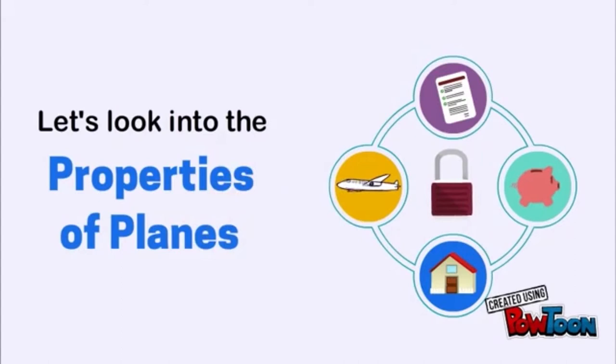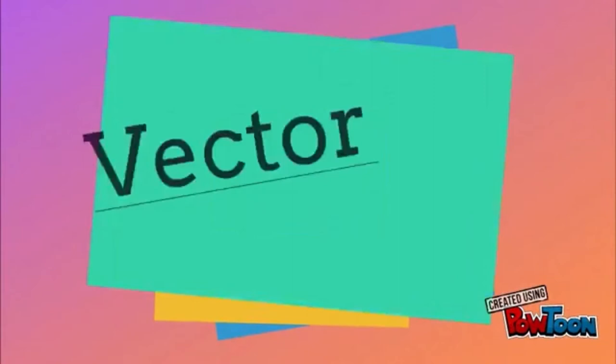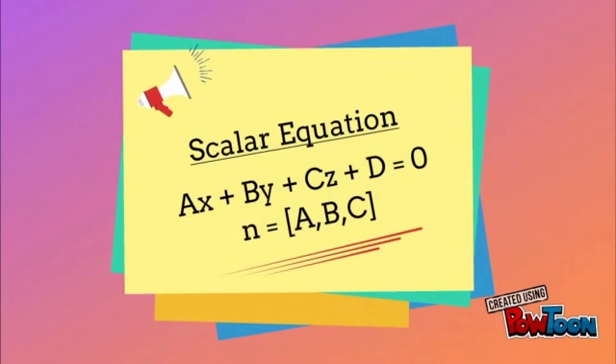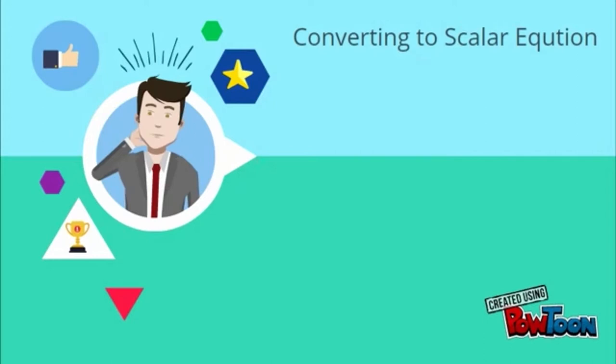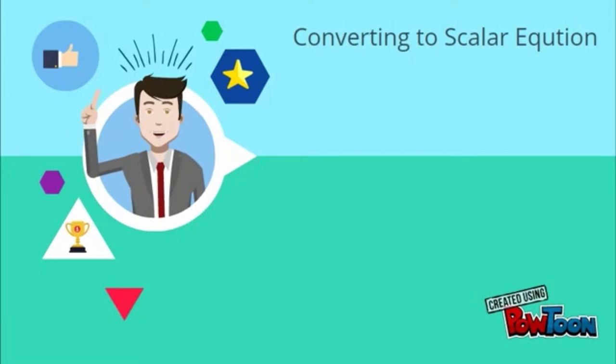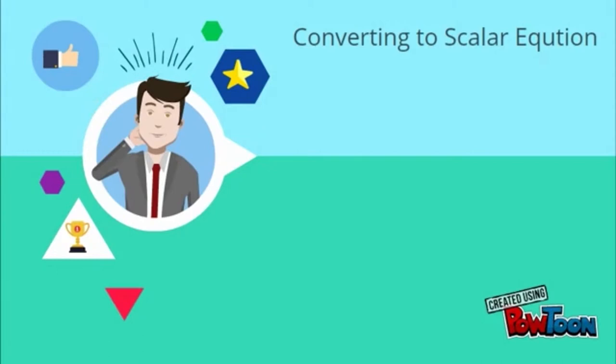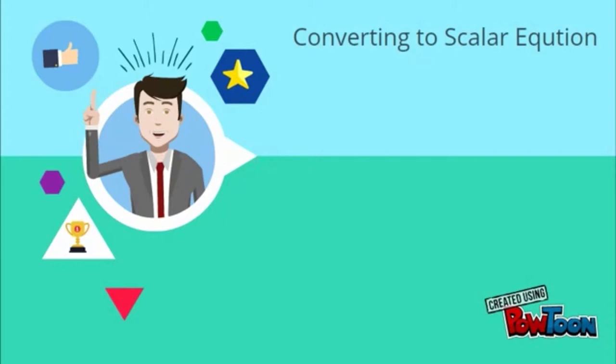In this part of the video, we'll be looking at the properties of planes. We'll go through the equations of a plane in three-space, how to convert from vector form to scalar form, and some practice problems. The vector form is expressed as shown, and the scalar equation form is shown here. The key component of converting a vector equation to a scalar equation is finding the normal vector.